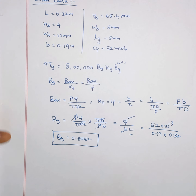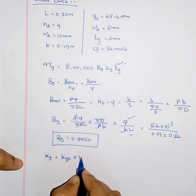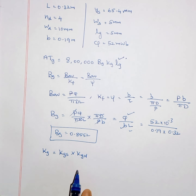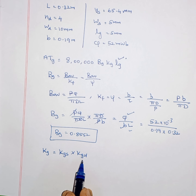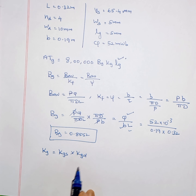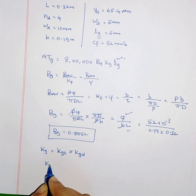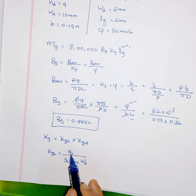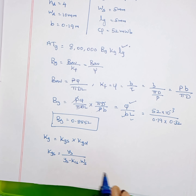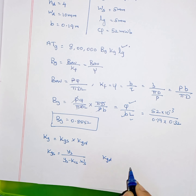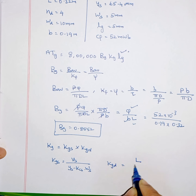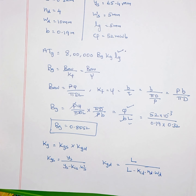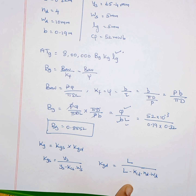Now we will find KG. As already explained, KG equals KGS times KGD — gap contraction factor for slot and gap contraction factor for duct. Since ducts are given here we must consider KGD also. KGS formula is YS divided by (YS minus KCS times WS), and KGD is L divided by (L minus KCD times ND times WD). We need to find KCS and KCD first.